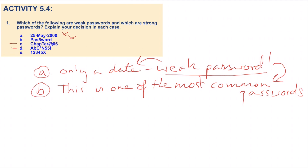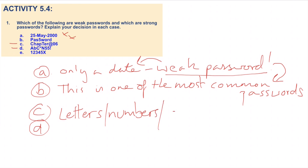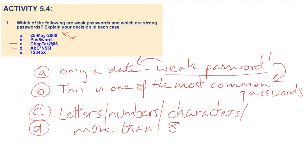C and D are both very strong passwords, especially C, because C has symbols, upper and lowercase letters, numbers, and it is above 8 characters. This is really essential — above 8 characters is what you should be looking at. D also has 8 characters, so that's great.